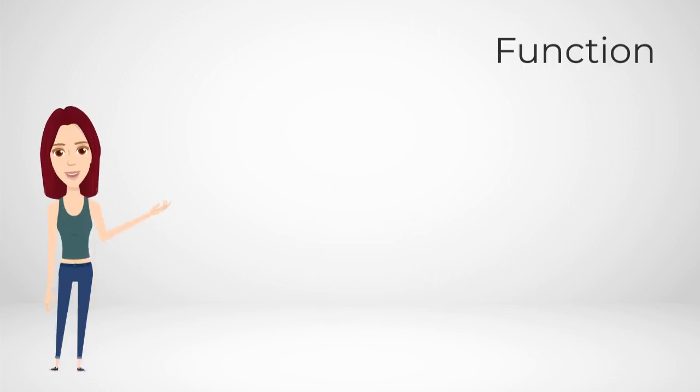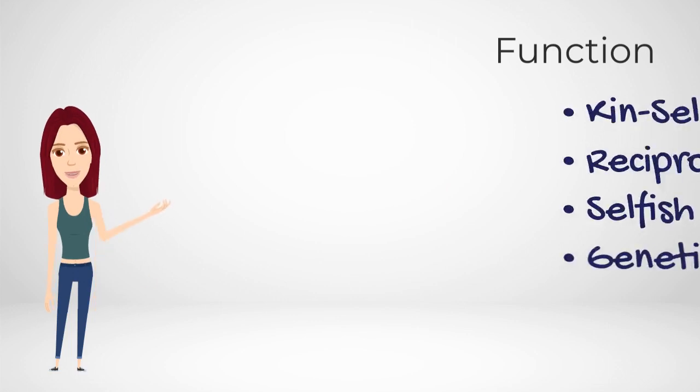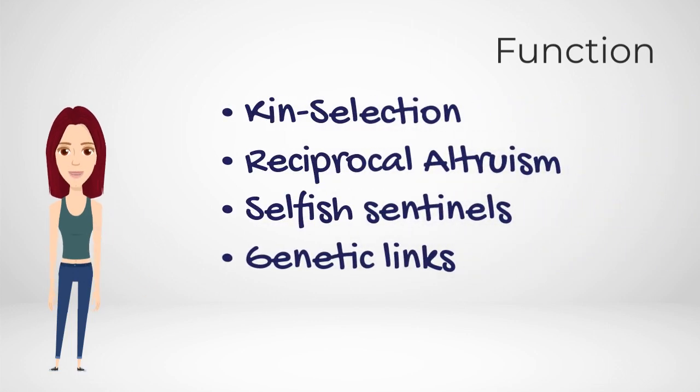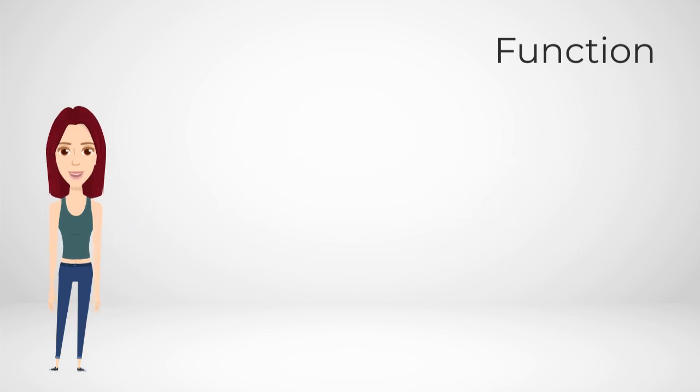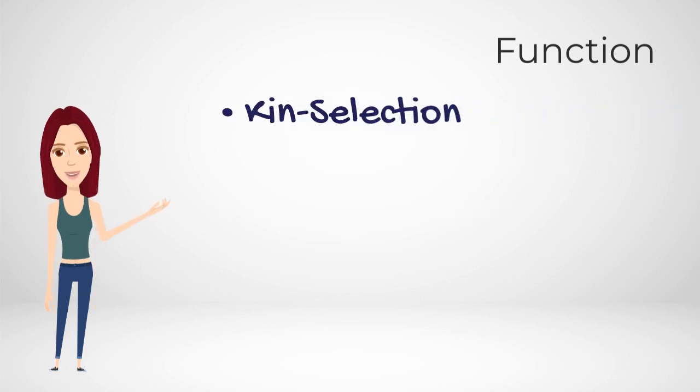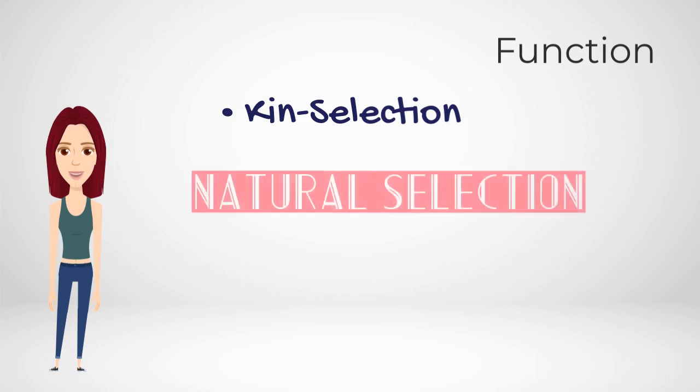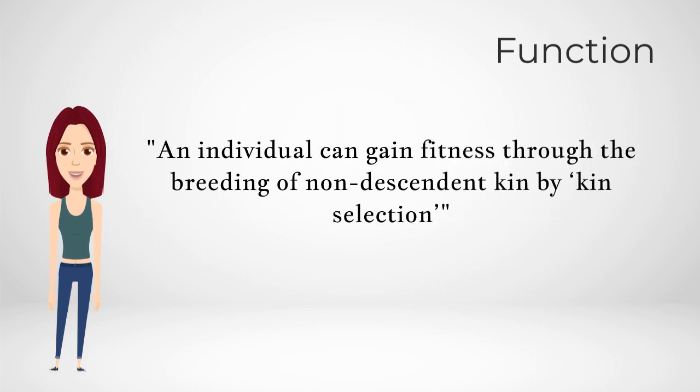There are several theories to explain how this altruistic behaviour has arisen. These include kin selection, reciprocal altruism, selfish sentinels and genetic links. The theory behind kin selection is based around the term inclusive fitness put forward by Hamilton. He stated that their altruistic behaviour would be favoured more by natural selection. The inclusive fitness theory states that an individual can gain fitness through the breeding of non-descendant kin by kin selection.